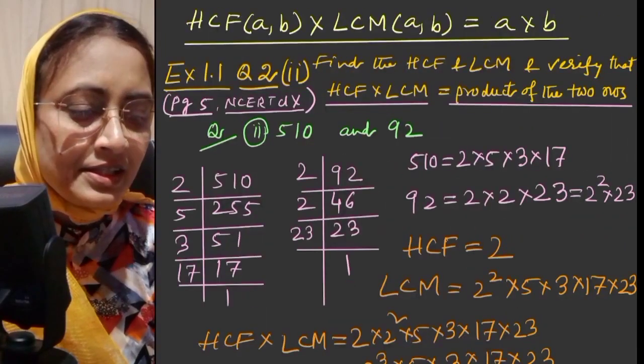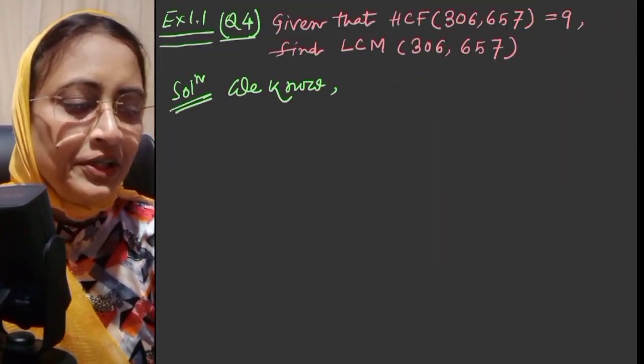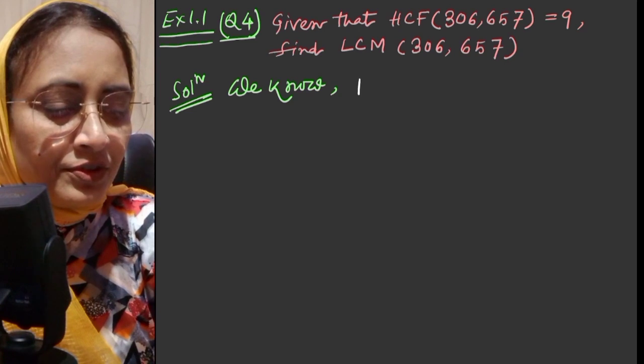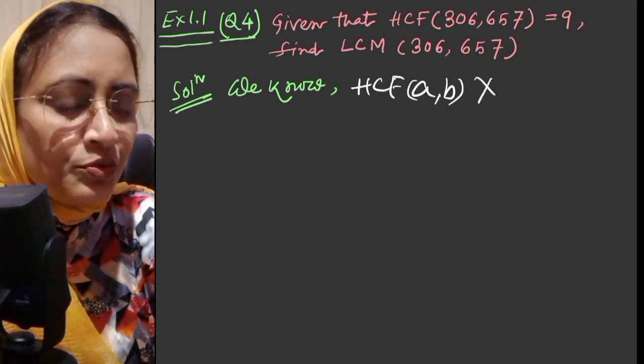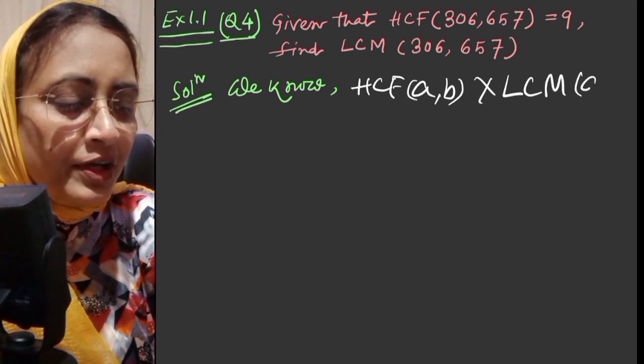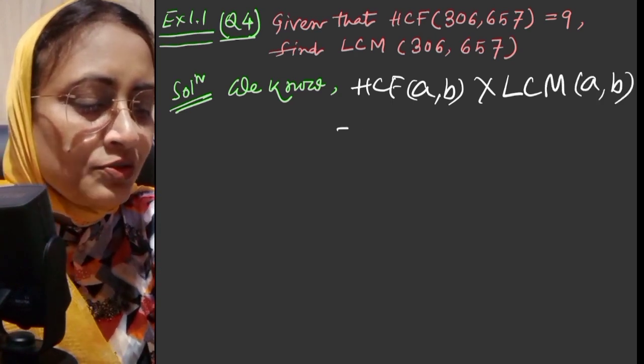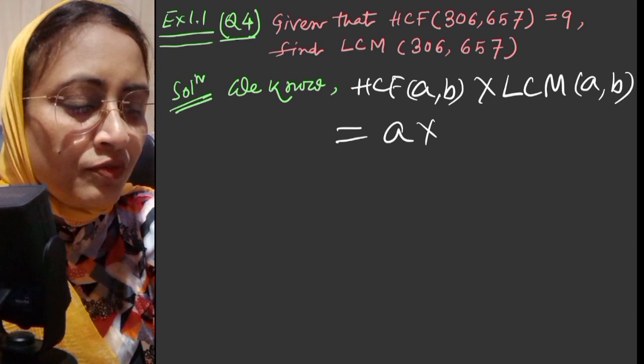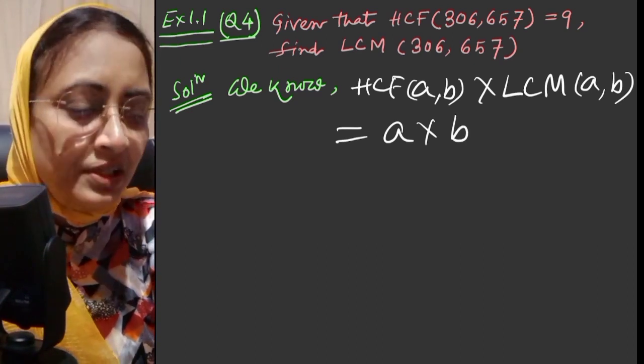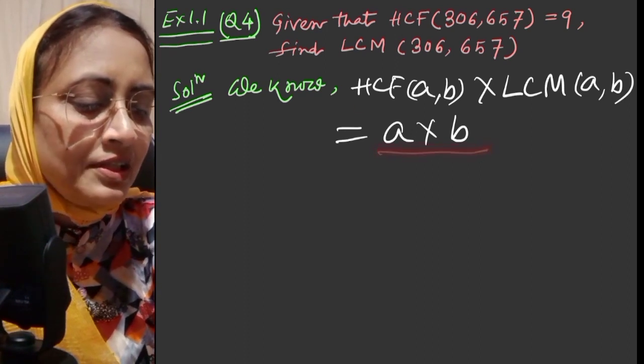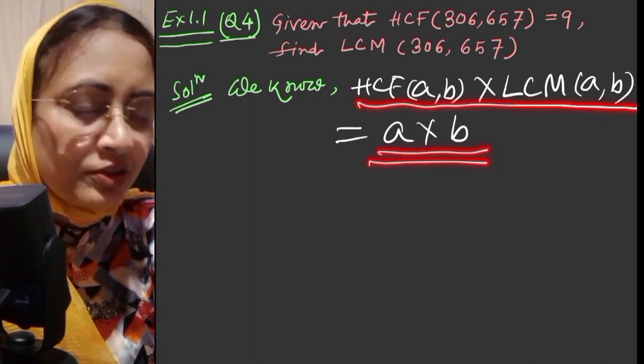Now I'm going to do this sum, question number 4. In this sum we'll use the property: HCF of a,b times LCM of a,b, for two numbers, is equal to the product of the numbers. If a and b are positive integers, then HCF times LCM is equal to product of the numbers.